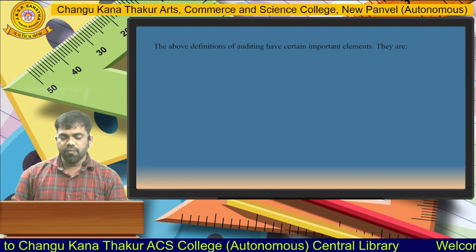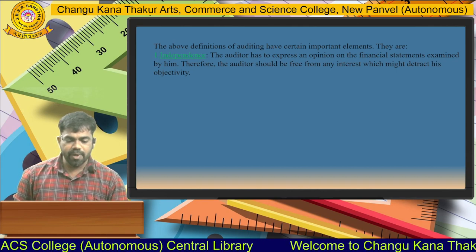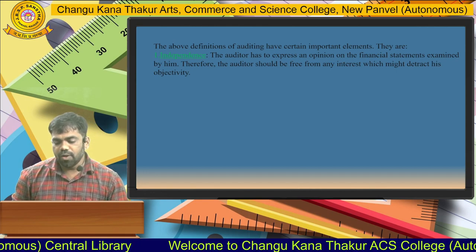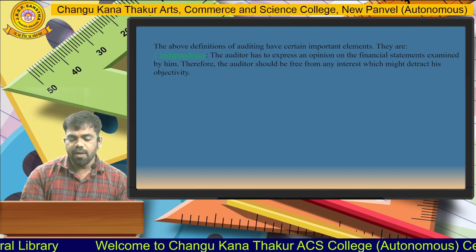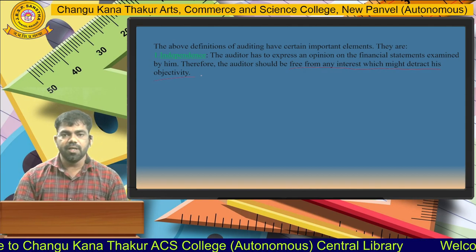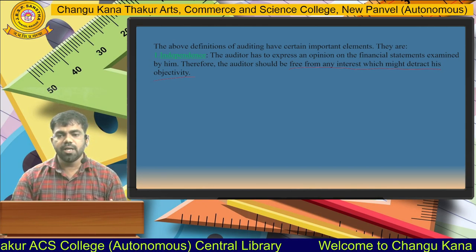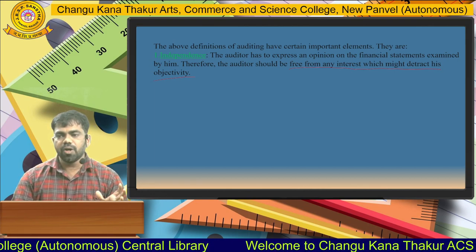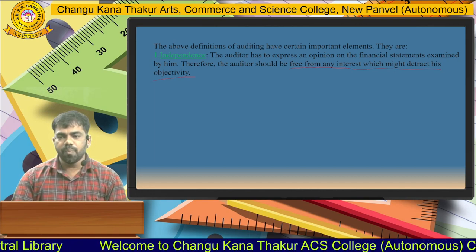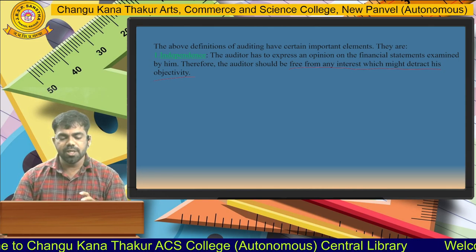From the above definition there are three important elements. The first is independence. The auditor has to express an opinion on the financial statements examined by him, therefore the auditor should be free from any interest which might distract his objectivity. That is why the auditor is appointed as a third party, who can audit the entire business activity and transactions in a proper, unbiased way.